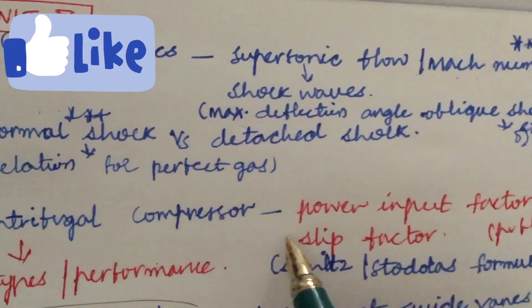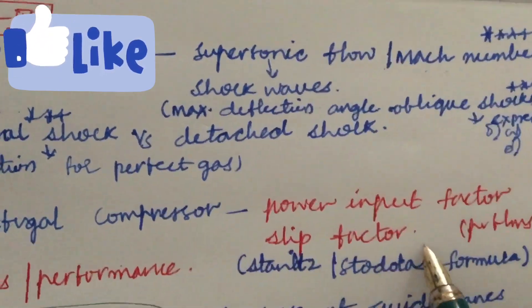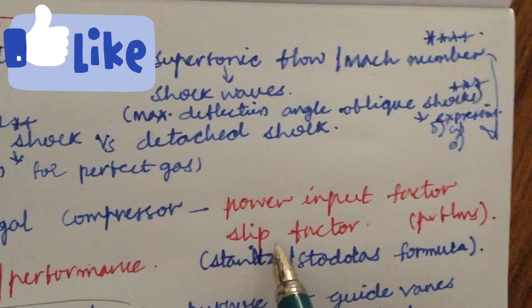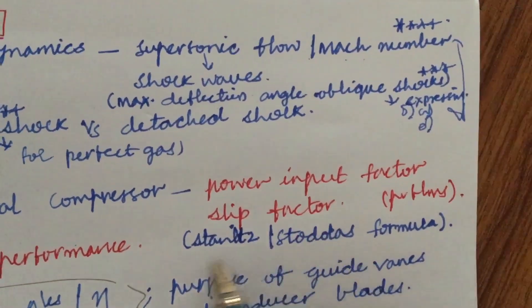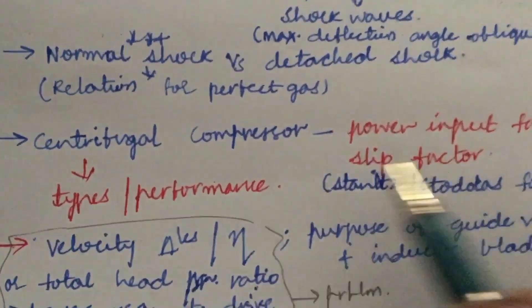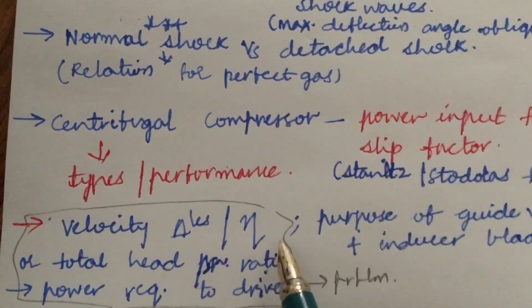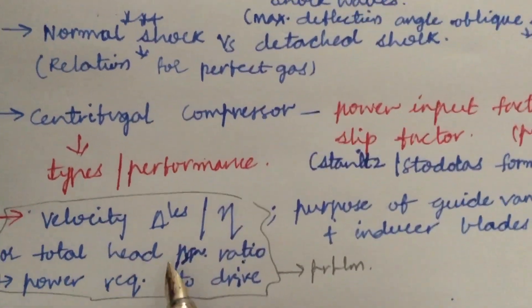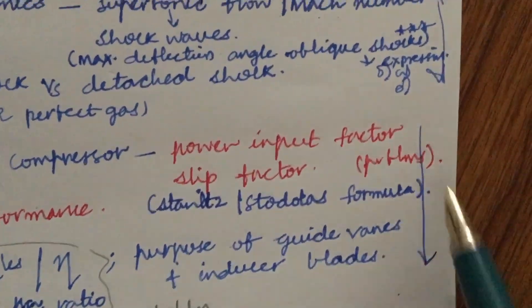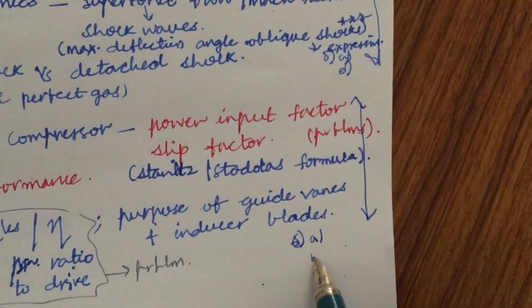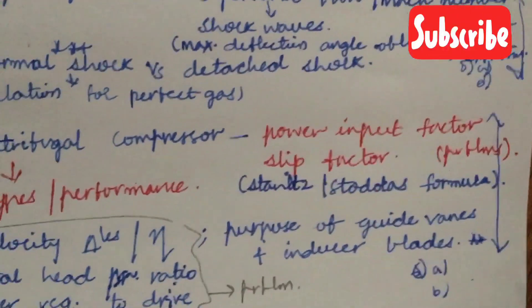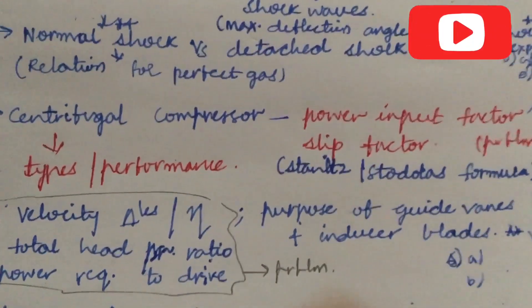Next, the centrifugal compressor — the power input factor, slip factor, types of centrifugal compressors, performances, and working principle. They will be asking a 10-mark problem based on slip factor using two formulas to calculate velocity triangles, efficiency of the compressor, total head pressure ratio, or power required to drive the compressor. This is a much-awaited gunshot question, and we can expect question 6A and 6B from these concepts. The purpose of guide vanes and inducer blades is also a 5-mark question.